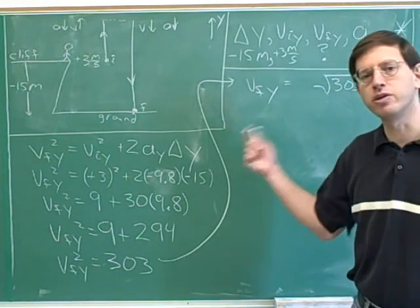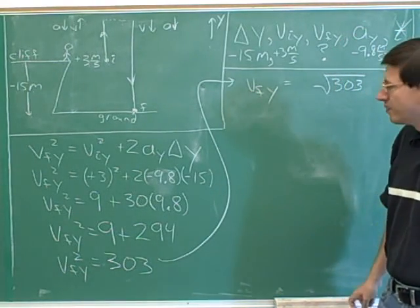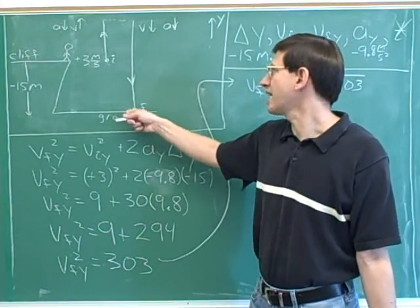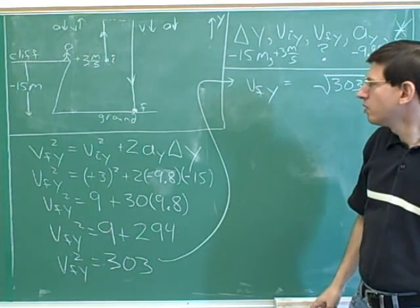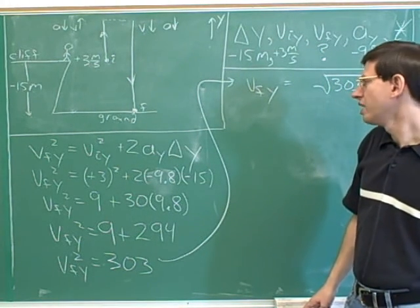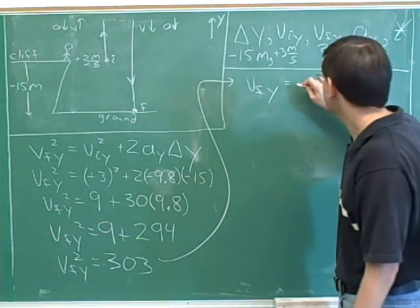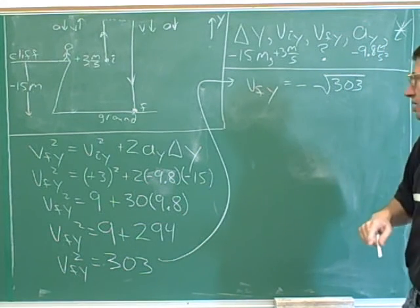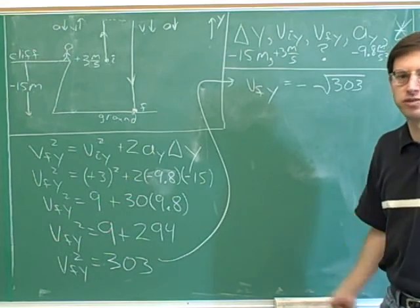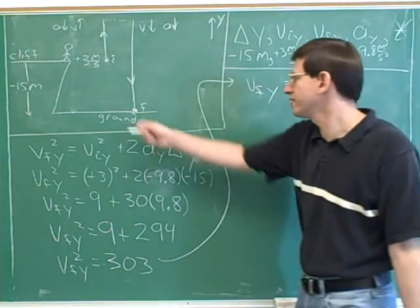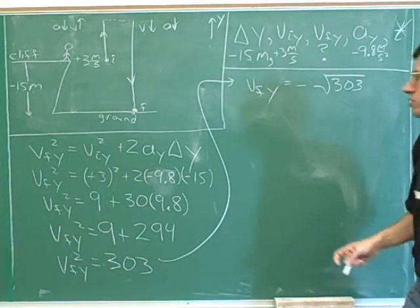In some problems you need to pay attention to both roots, and in some problems only one. In this problem, we know that when we hit the ground we're going to be moving down. On the downward path, velocity is downward, and we chose up as the positive direction — so down is negative. Therefore we should ignore the positive square root and only pay attention to the negative square root, because we're moving down when we hit the ground.